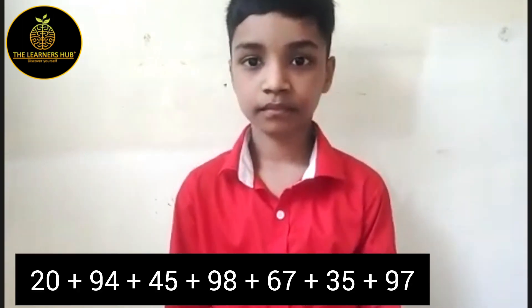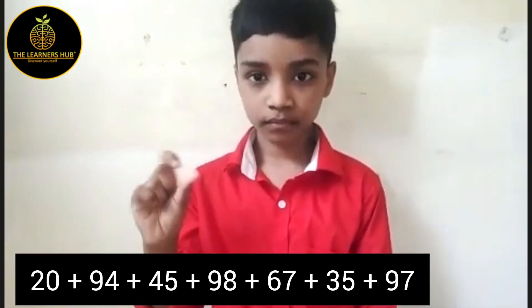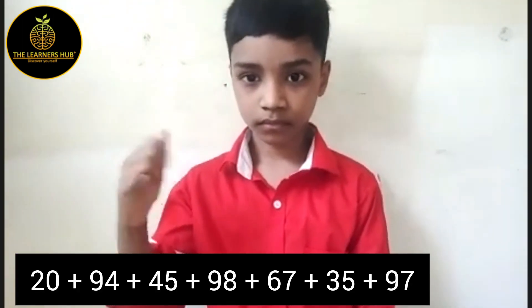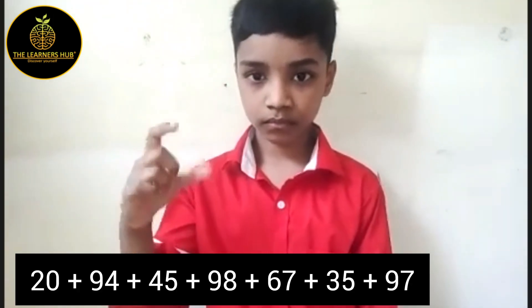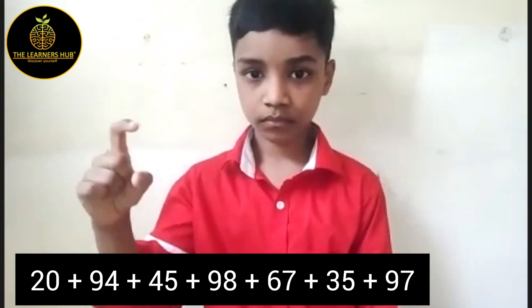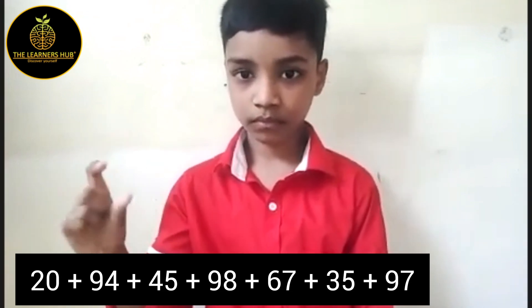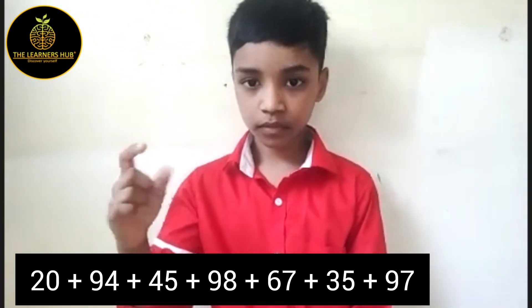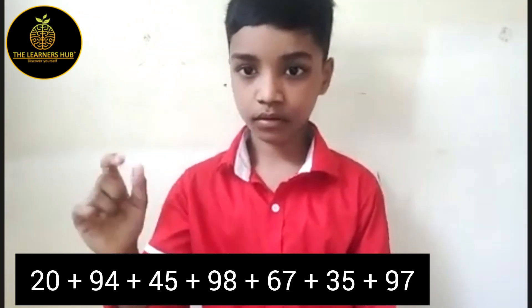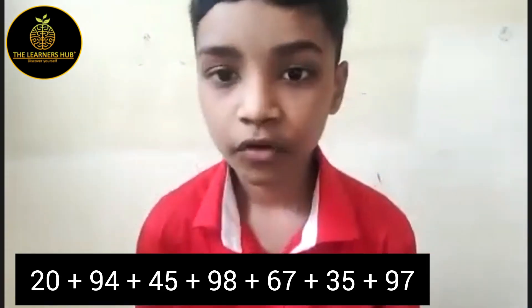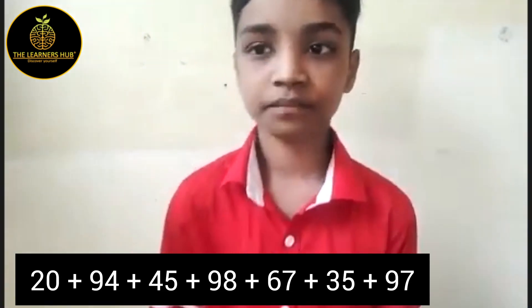Very good. Next question. 2 digit addition: 20, 94, 45, 98, 67, 35, 97. Answer is 456.